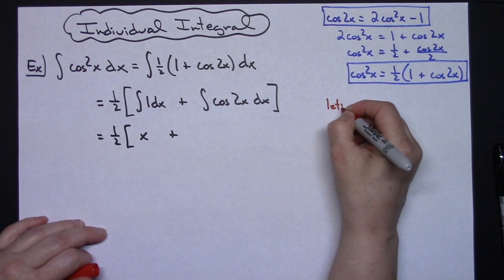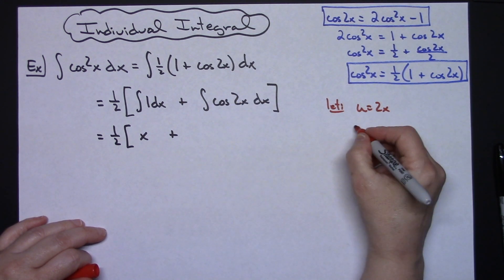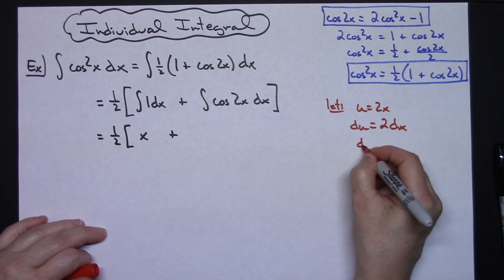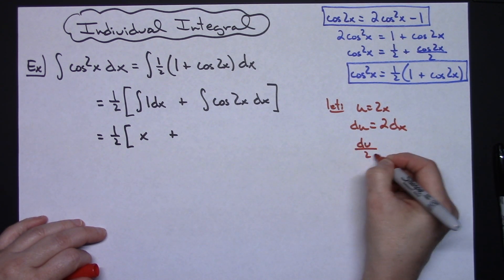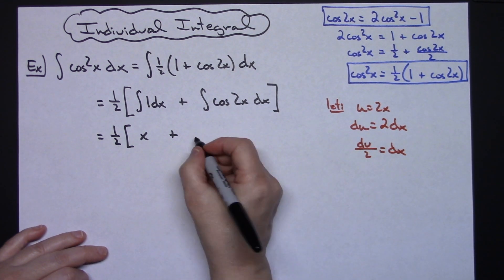We're going to let our u equal 2x because that's the inside function right there. If I take the derivative of both sides, I'll have du equals 2 dx. And if I divide both sides by that 2, I'll have du over 2 equals dx. That's going to be letting me pull out that 1 half on this integral.